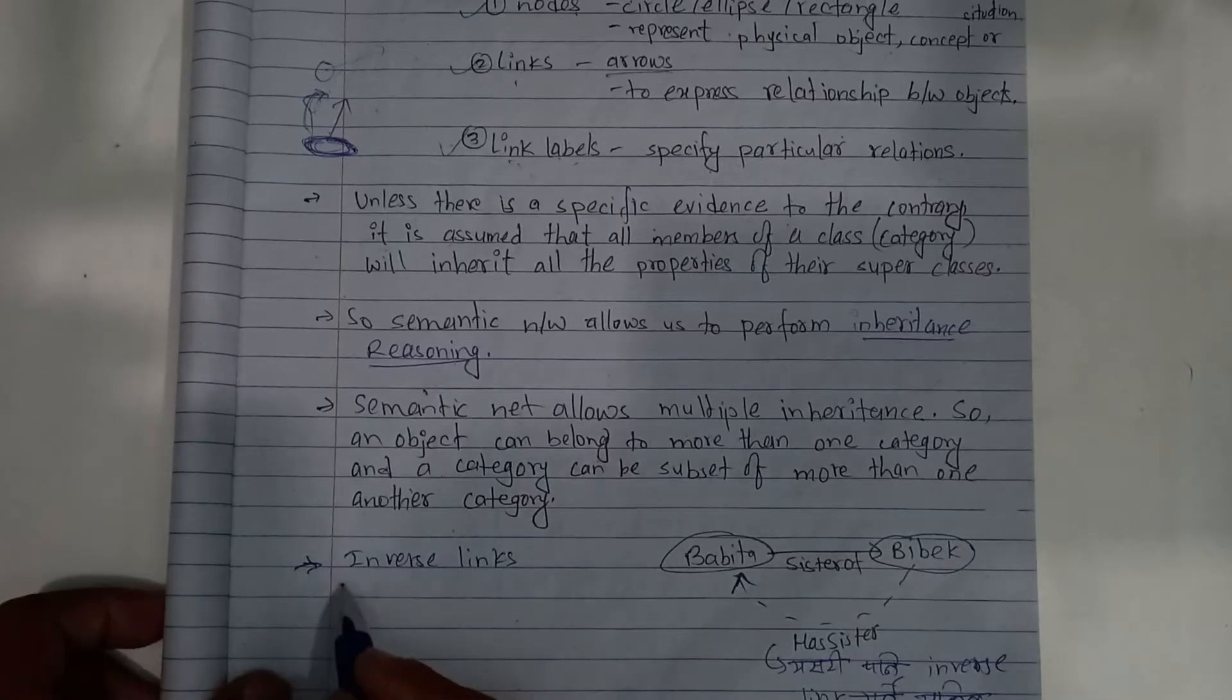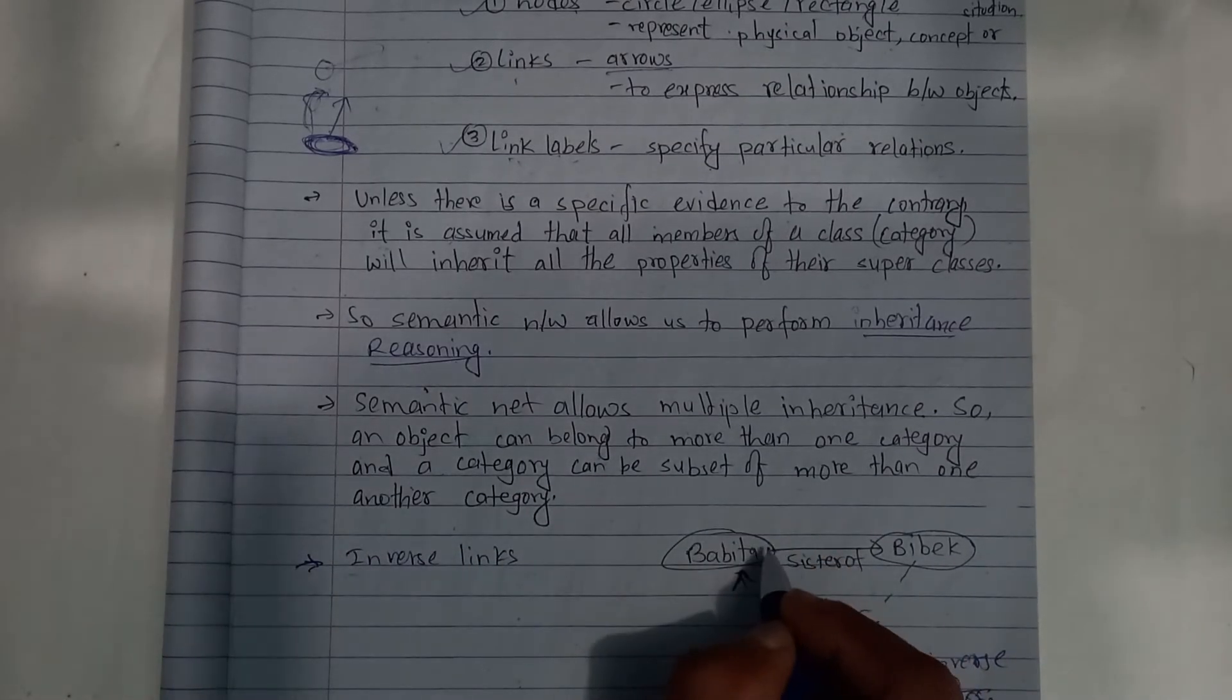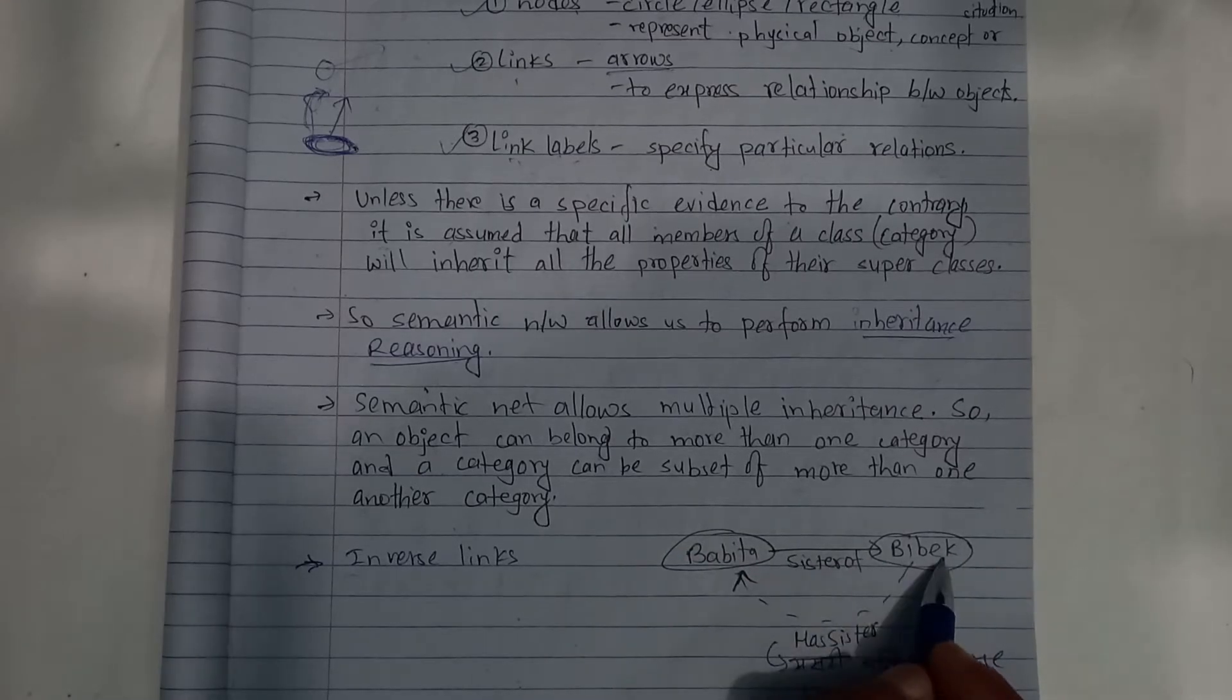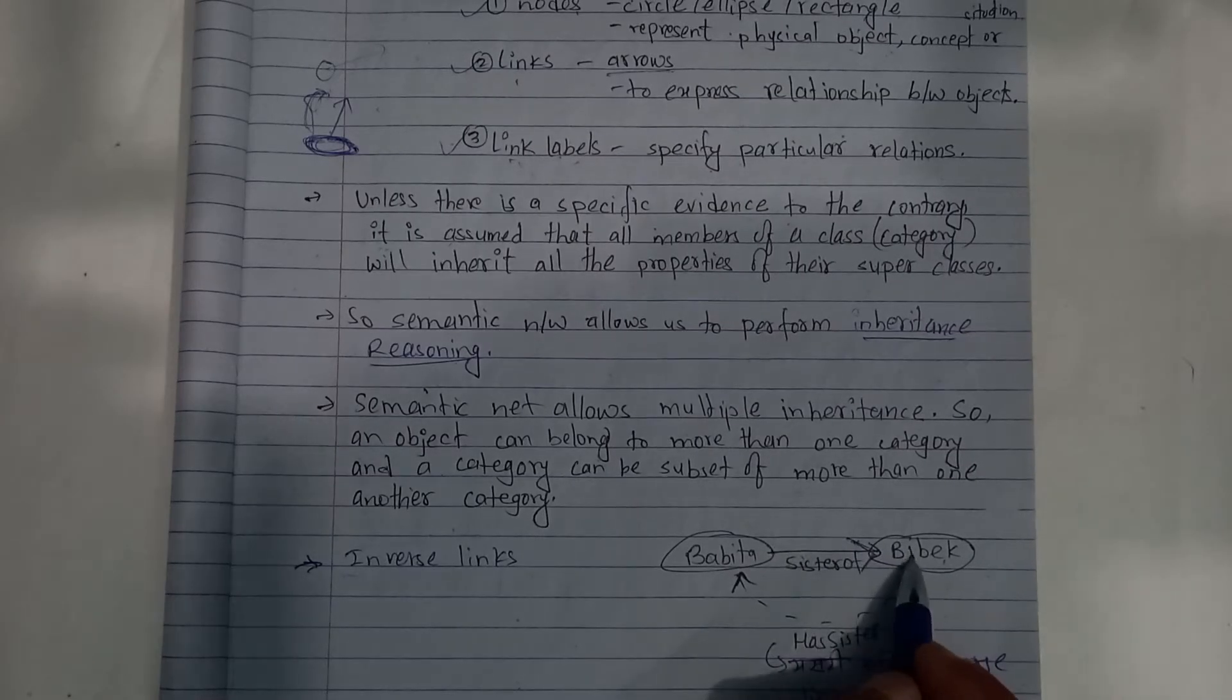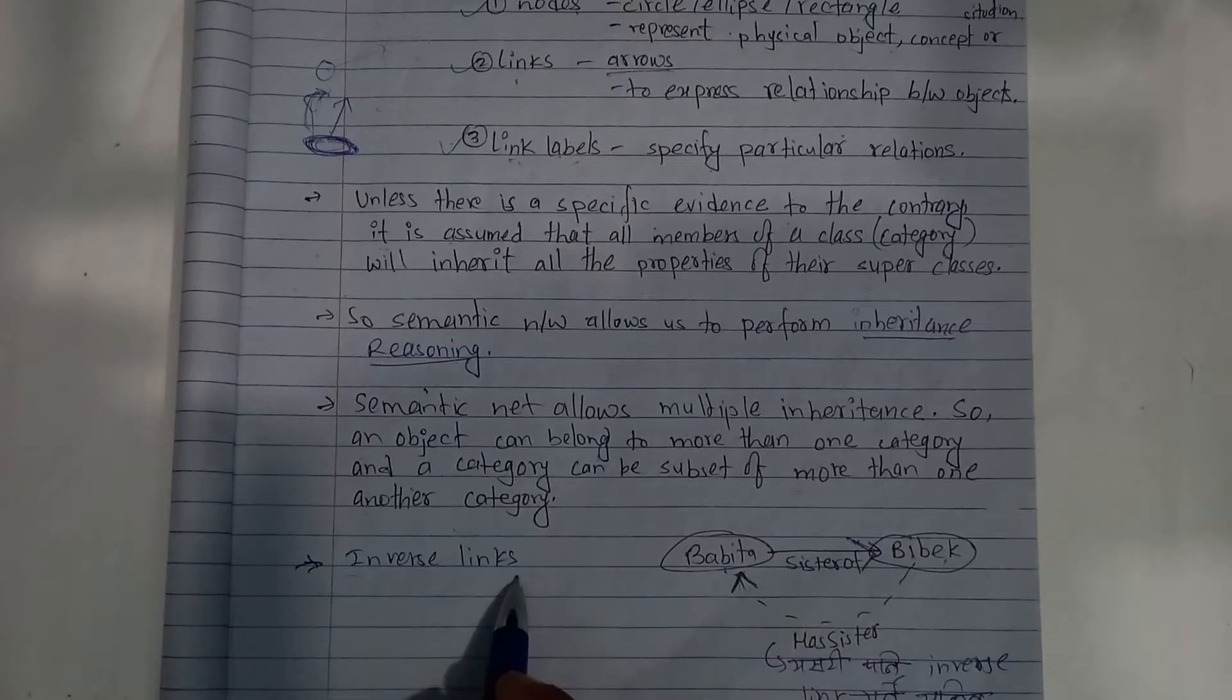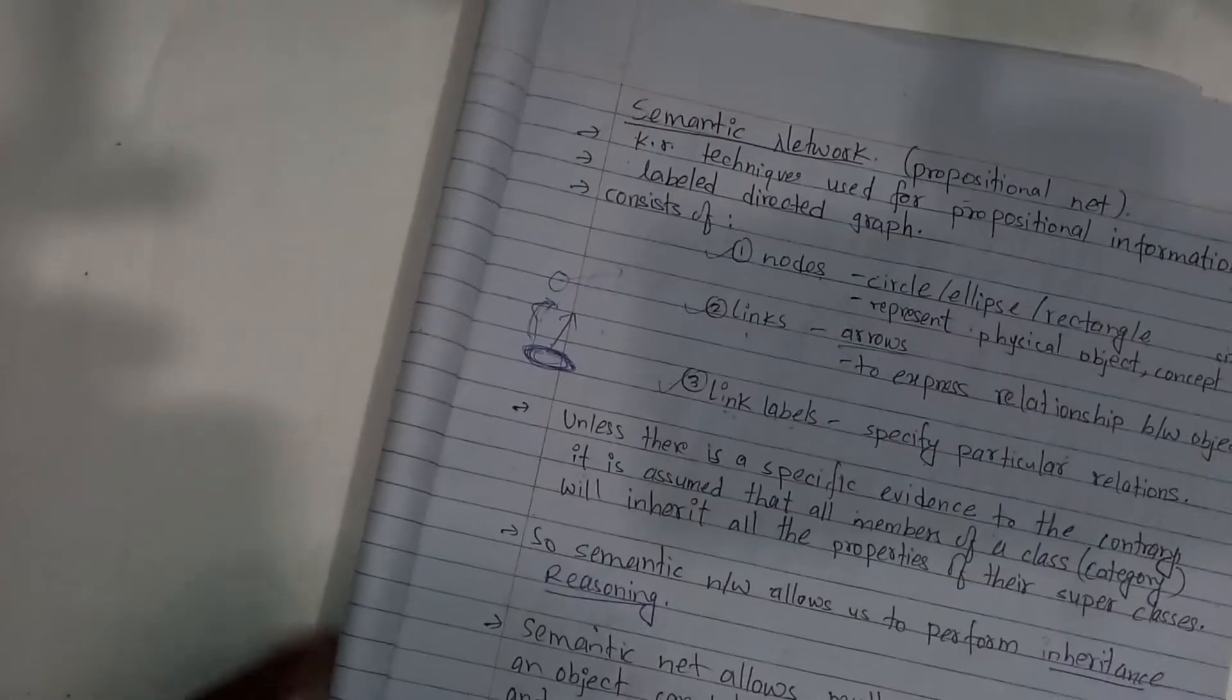Inverse links can be used. For example, Bob is the sister of Bibak. We need to look at inverse links when representing bidirectional relationships. Let's see the advantages.